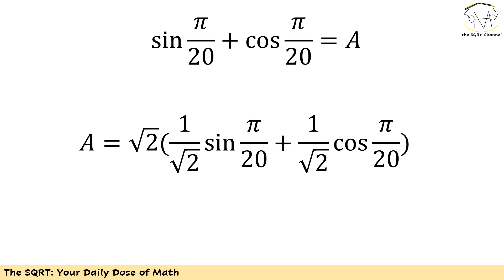I'm going to multiply both sides by √2 and then divide by √2. Let's see what we are going to have, and then I'll explain why I'm doing that. If I multiply by √2 and then divide by √2, I'm going to distribute this division to each term.